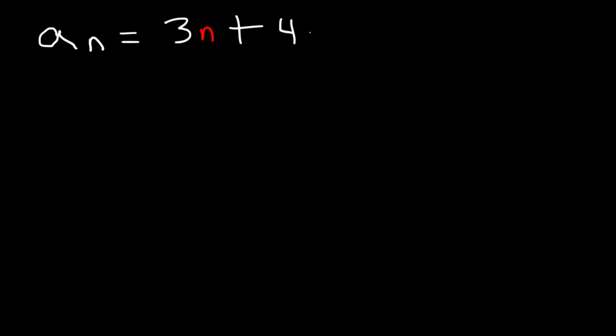So how can we find the first four terms of the sequence? Well the first term is a of 1. You just got to replace n with 1. So it's 3 times 1 plus 4, which is 7.